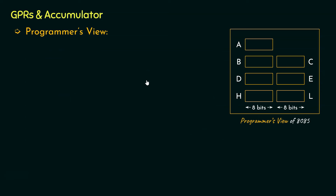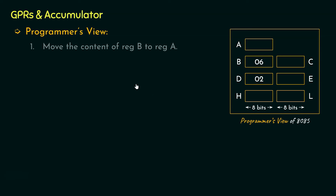Let me now show you that if we want to perform operations on data available in the general purpose registers, we will need the accumulator to perform the operation. Say within general purpose register B we have the data 06, and in D we have the data 02. Our intention is to add these two values and store the result back to register B. We cannot do this without the help of the accumulator — the entire process involves three steps. First, we move the content of register B to register A, the accumulator. Now the accumulator holds 06 — we already have one operand in the accumulator.